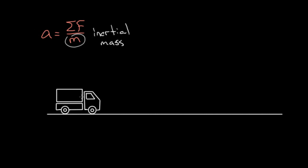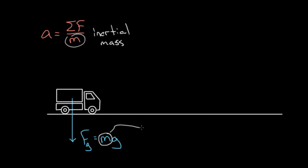But mass also tells you something else — it tells you how much that object is going to interact via gravity. So if this truck has a large mass, that also tells you its force of gravity is going to be very large. The force of gravity Fg on this truck is equal to mg. But this m is not inertial mass; it's telling you how much this truck interacts via gravity with other objects. That means this is the gravitational mass.